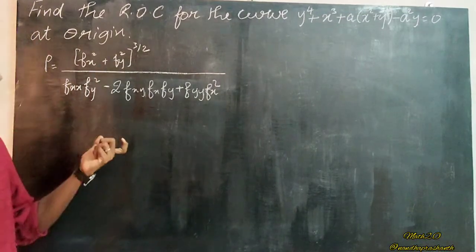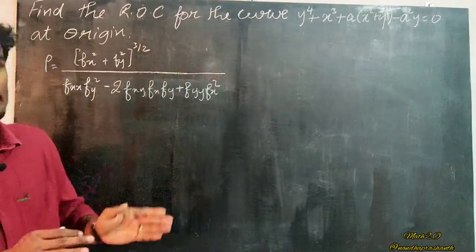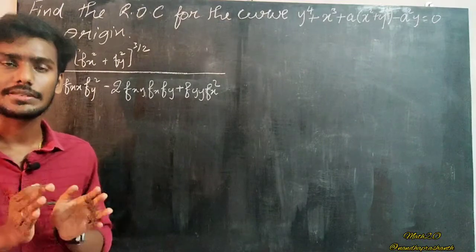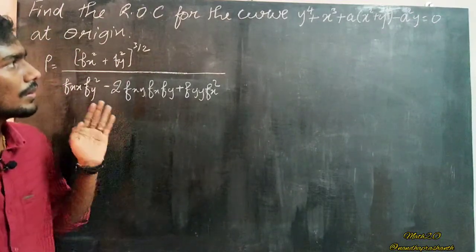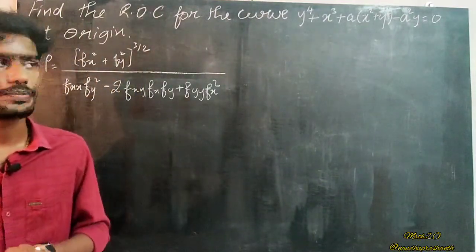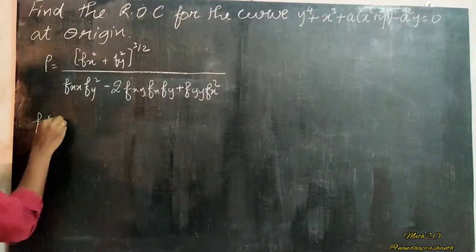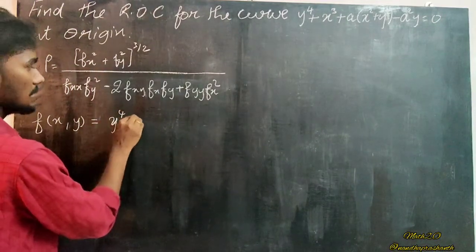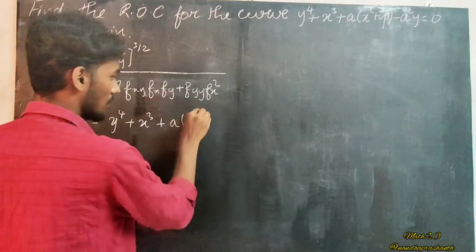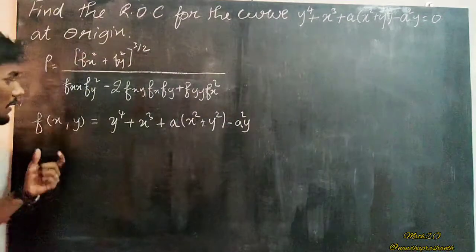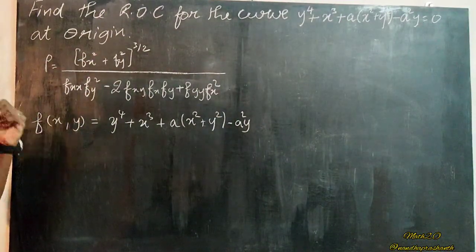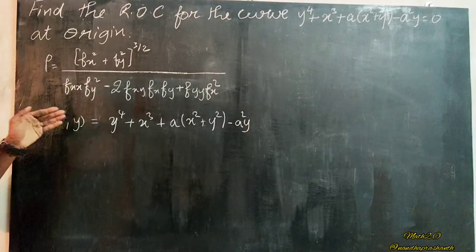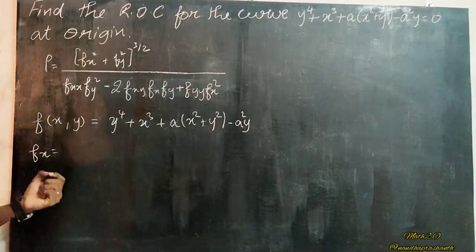Now, we need to find fx, fy, fxx, fxy, and fyy. Let's differentiate with respect to x — treating y as constant in the equation — and also differentiate with respect to y, treating x as constant. We are going to work on the function f(x, y), which is: y to the power 4, plus x cubed, plus a times x squared, plus y squared, minus a squared times y.